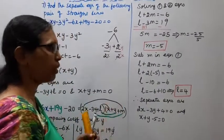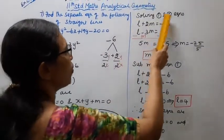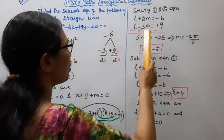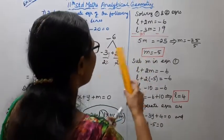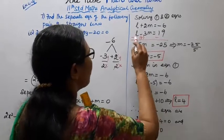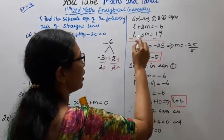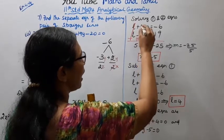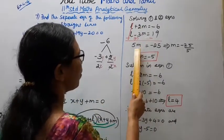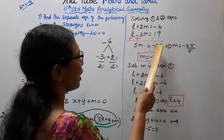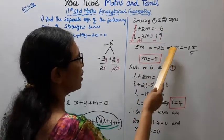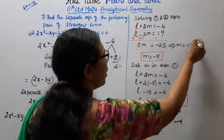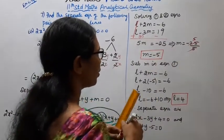Solving equations 1 and 2: L plus 2m equals minus 6, and L minus 3m equals 19. Sign change — minus cancels. 2m plus 3m gives 5m. Minus 6 minus 19 equals minus 25. Therefore m equals minus 25 divided by 5, so m equals minus 5.